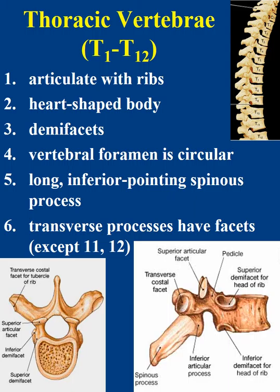There are twelve thoracic vertebrae, each articulating with the ribs. They lack the mobility of other vertebrae due to their stabilizing rib articulations. The thoracic vertebral bodies are heart-shaped and the spinous process is relatively pointed and long. There are demifacets on the lateral sides of the body and on the sides of the transverse processes — semicircular depressions that articulate with the superior or inferior edge of the rib head. Vertebrae T1 through T10 have transverse facets on their transverse processes, whereas T11 and T12 lack these because their ribs have no tubercles and do not articulate with the transverse processes.